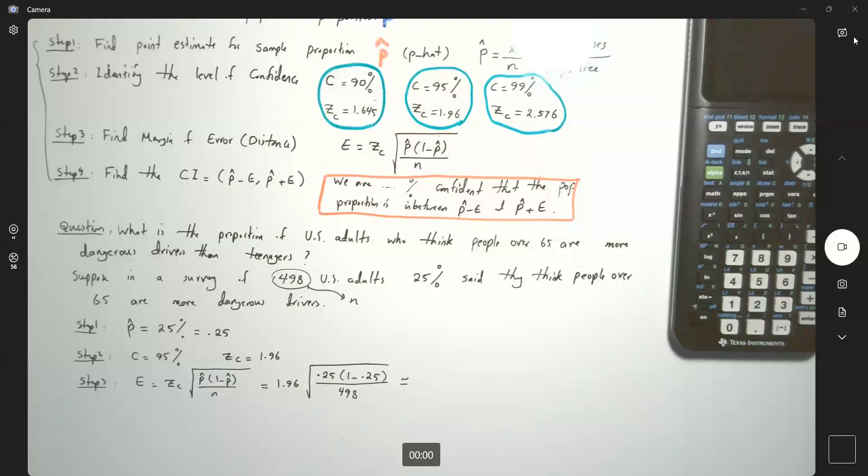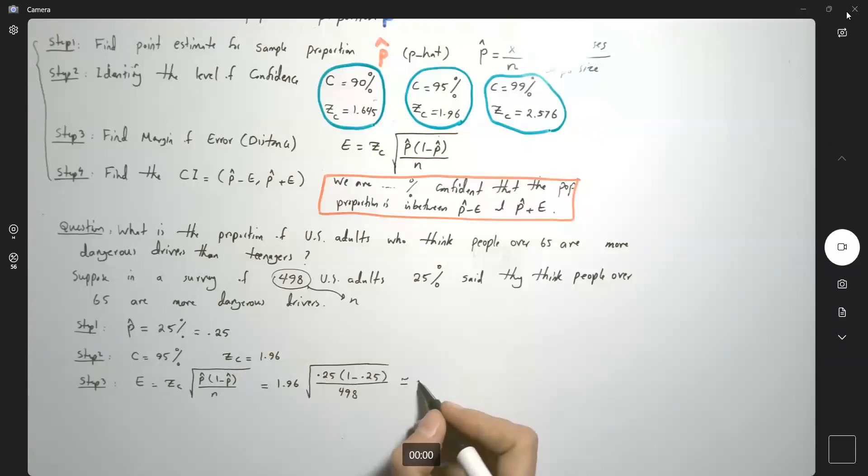What is this distance? So, approximately we have 0.04 or 4 percent. 4 percent is the distance from 25 percent.